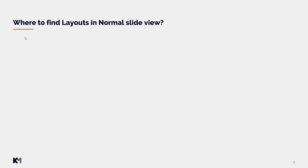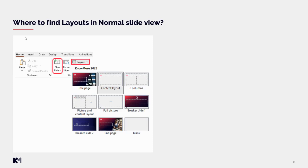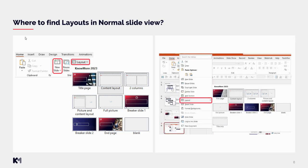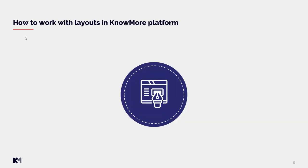Now you know what a layout is and what the most common types are — but where do you find layouts in normal slide view? You have multiple options. In the top panel you can choose the Layout button, which shows current layout options and lets you switch the layout of your current slide. You can also use the New Slide button to add a new slide and choose its layout. Alternatively, right-click on a slide in the side panel to access the layout options.